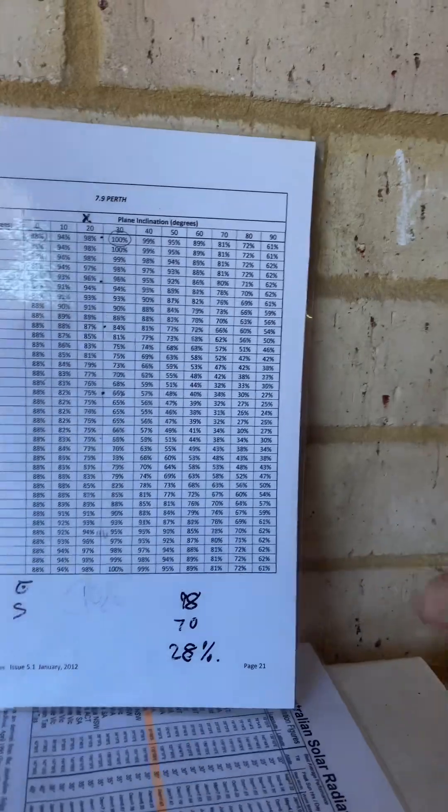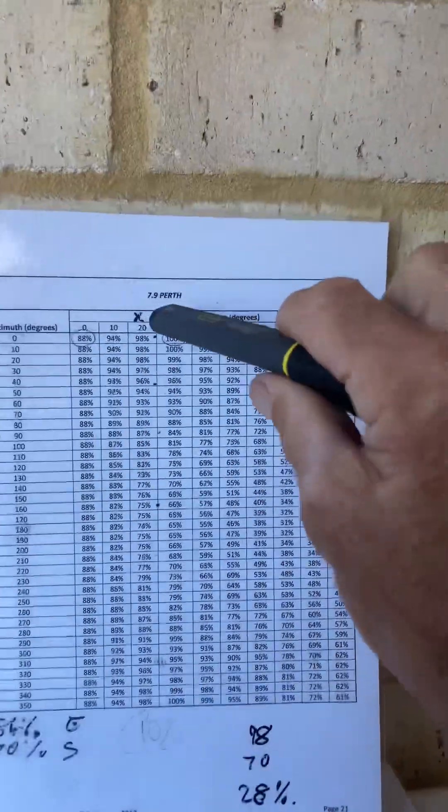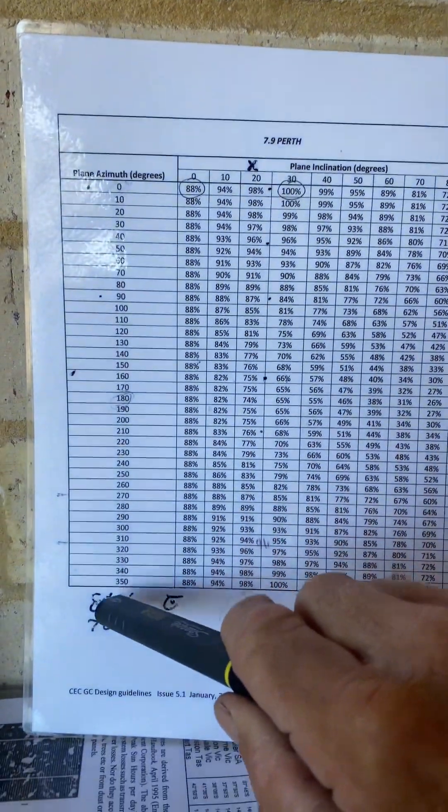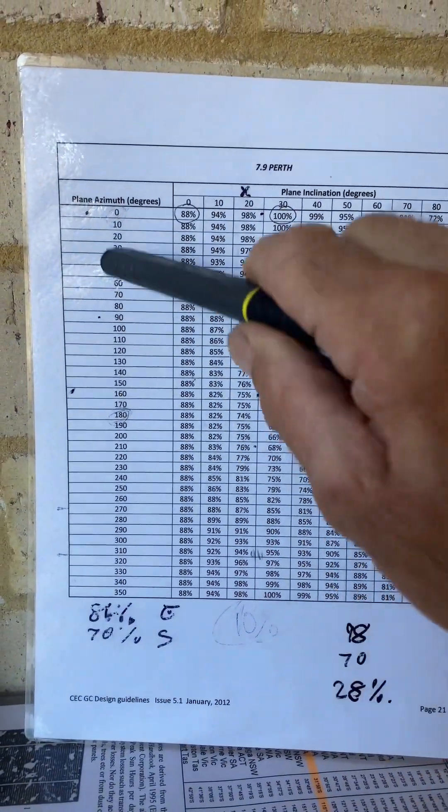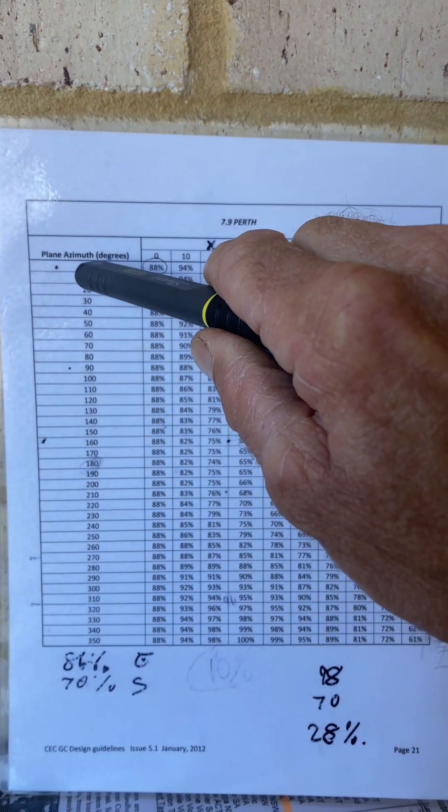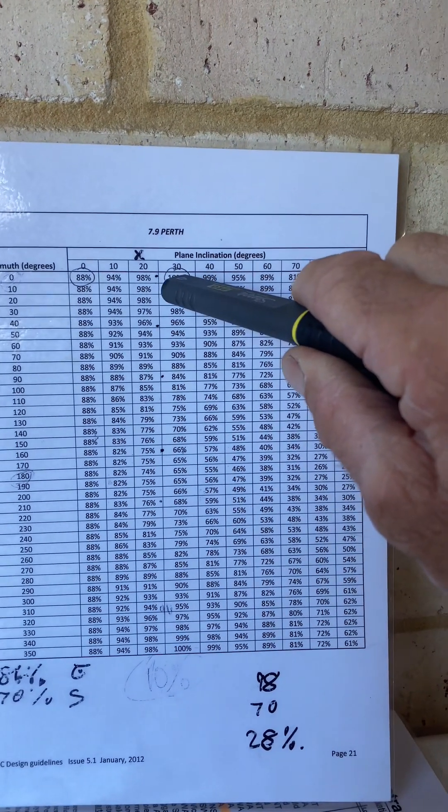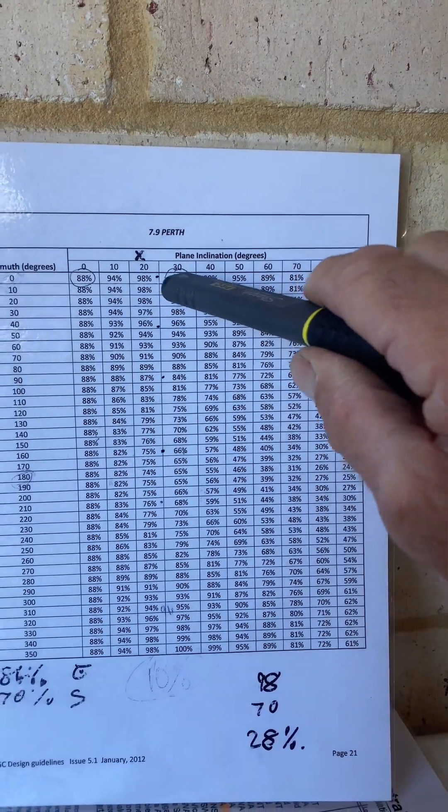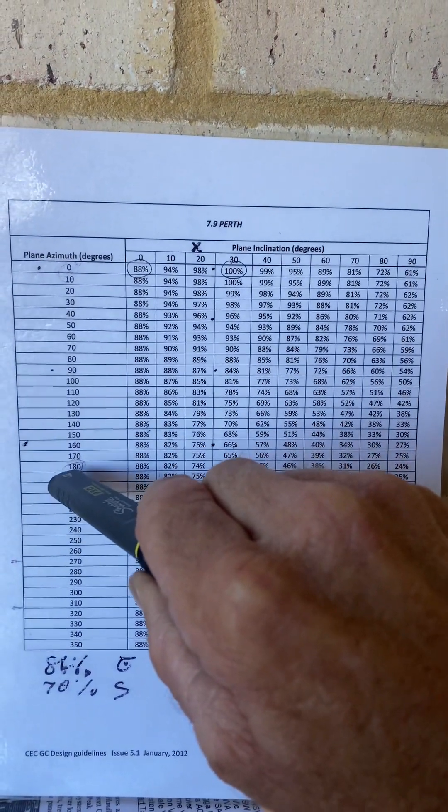So, for example, this is specific to Perth. This is the azimuth, so this is the orientation. So zero would be true north. So if I've got a solar panel facing true north, and it's tilted at 30 degrees, it's going to be 100% efficient. Let's spin that panel around now, so it's facing south. So at 180 degrees,